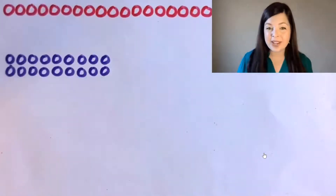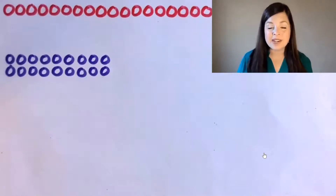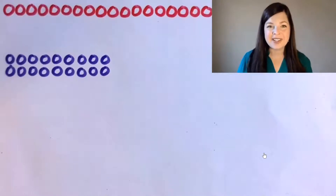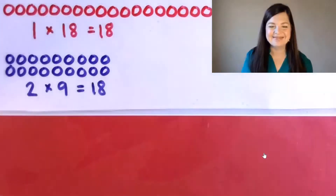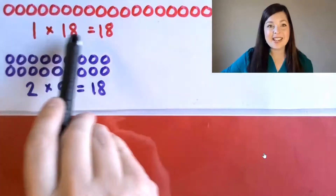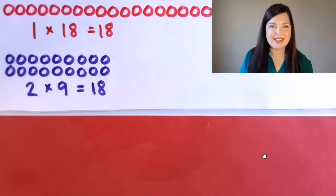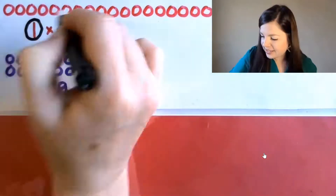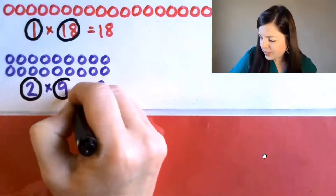Here are two new arrays. Take a moment to analyze them. What product is represented by both arrays? Eighteen is the product. Pause the video here, draw both of these arrays, and write the multiplication sentence to match for each one. Hopefully you wrote one times 18 equals 18, and two times nine equals 18. Now what are the factors in the multiplication sentences we wrote? Circle them. The factors are one, eighteen, two, and nine.